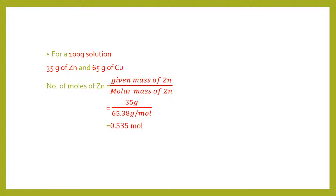So let us assume for a 100 gram solution there is 35 grams of zinc and 65 grams of copper. Hence the number of moles of zinc is equal to given mass of zinc divided by the molar mass of zinc which is equal to 35 grams divided by 65.38 grams per mole, which gives us a value of 0.535 moles.